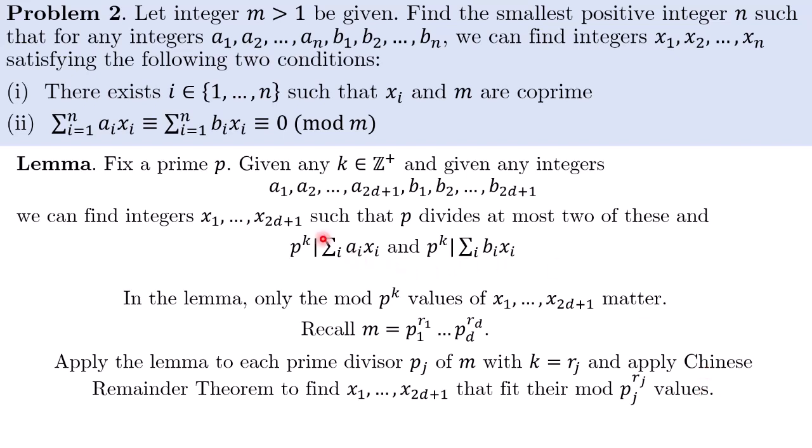And how does this finish the problem? Well, firstly, all the pk divides the sum, so condition 2 is met. But at the same time, because for each prime it divides at most 2 of these x's, there will be at least one x where none of the primes divide it. So this will conclude the problem. All that remains now is to prove the lemma.